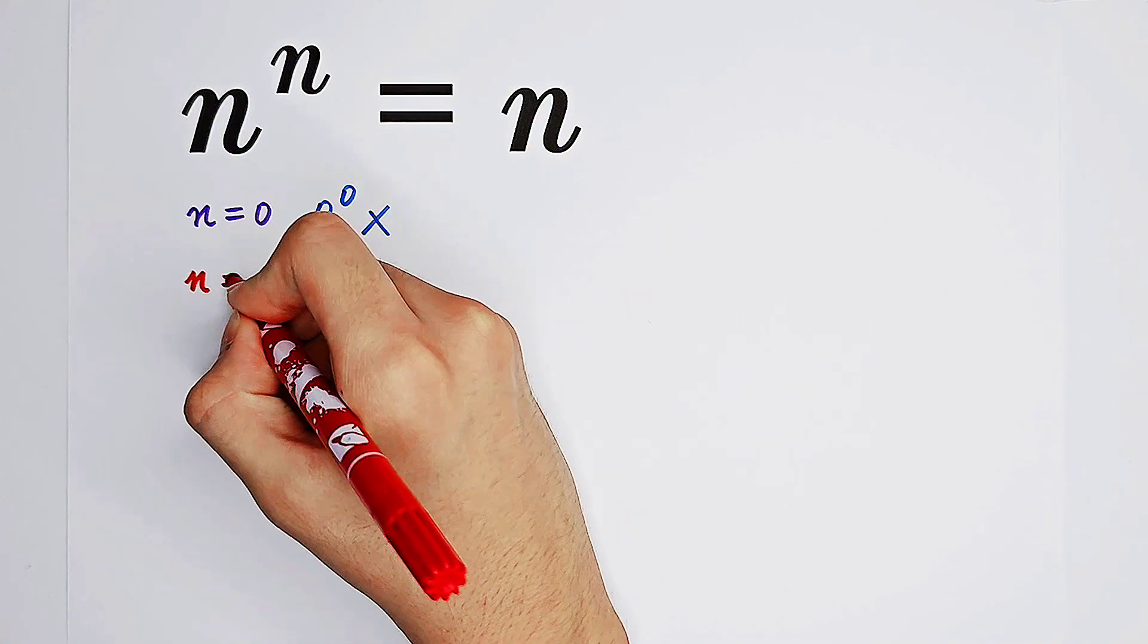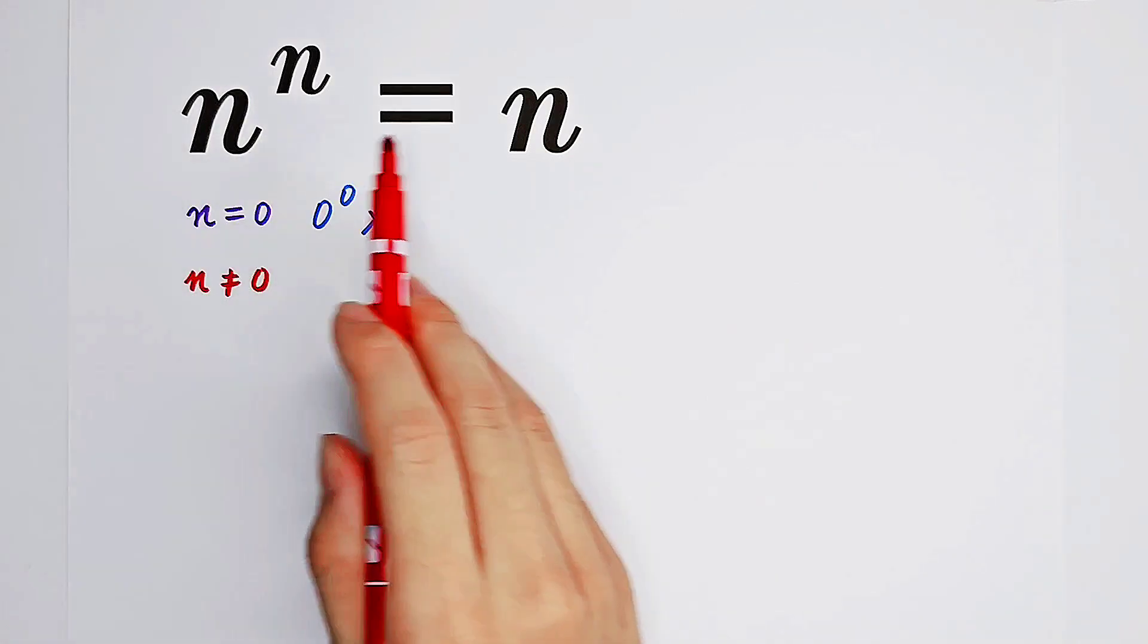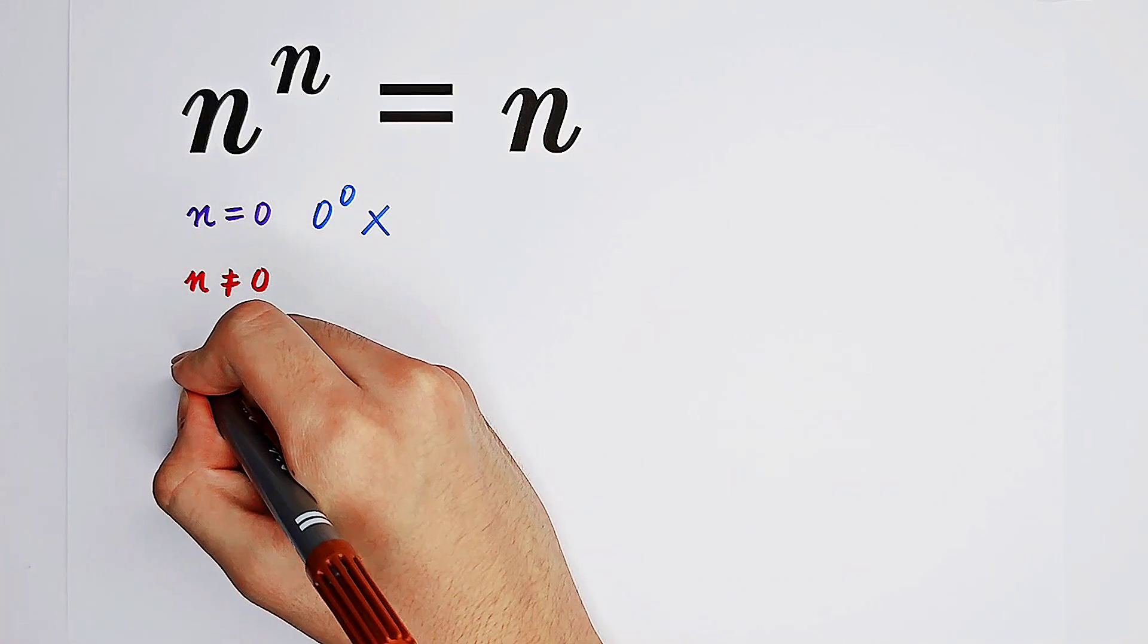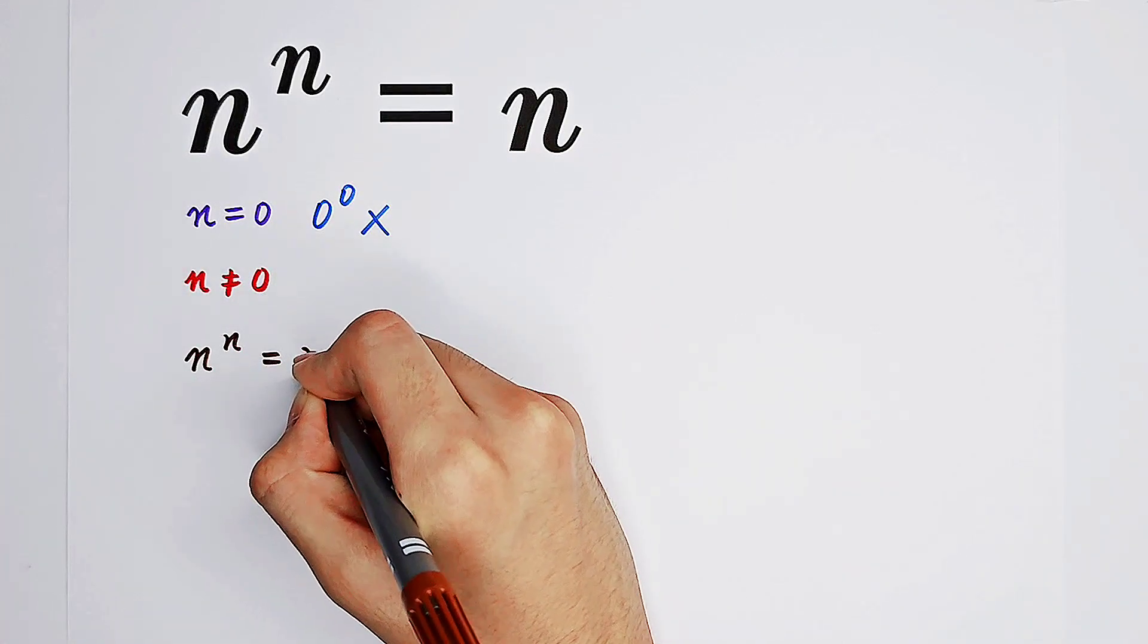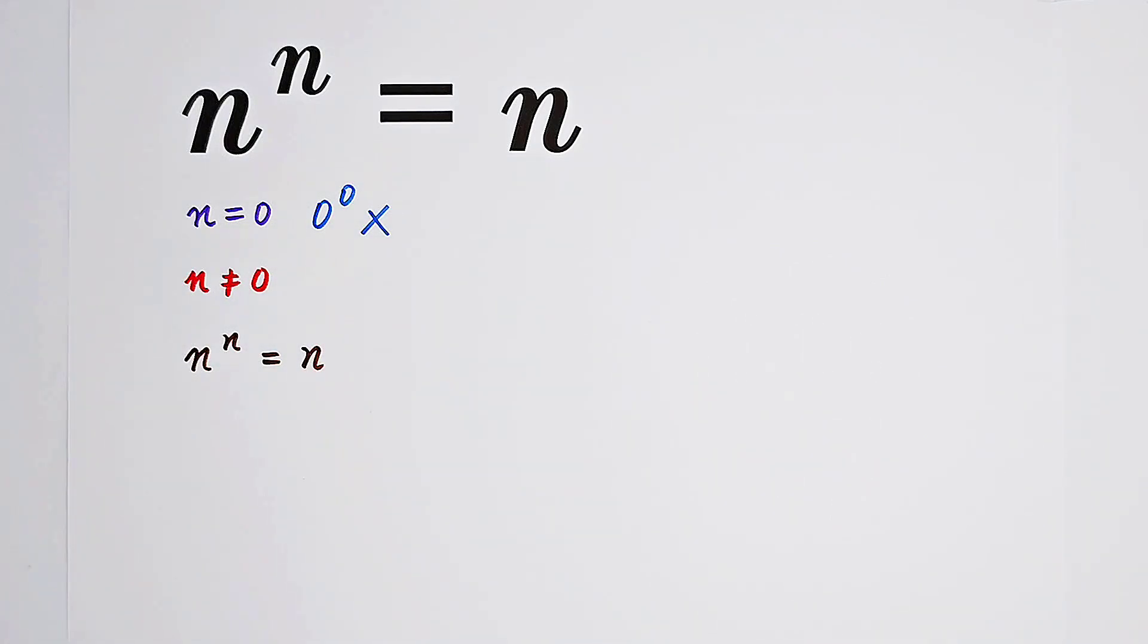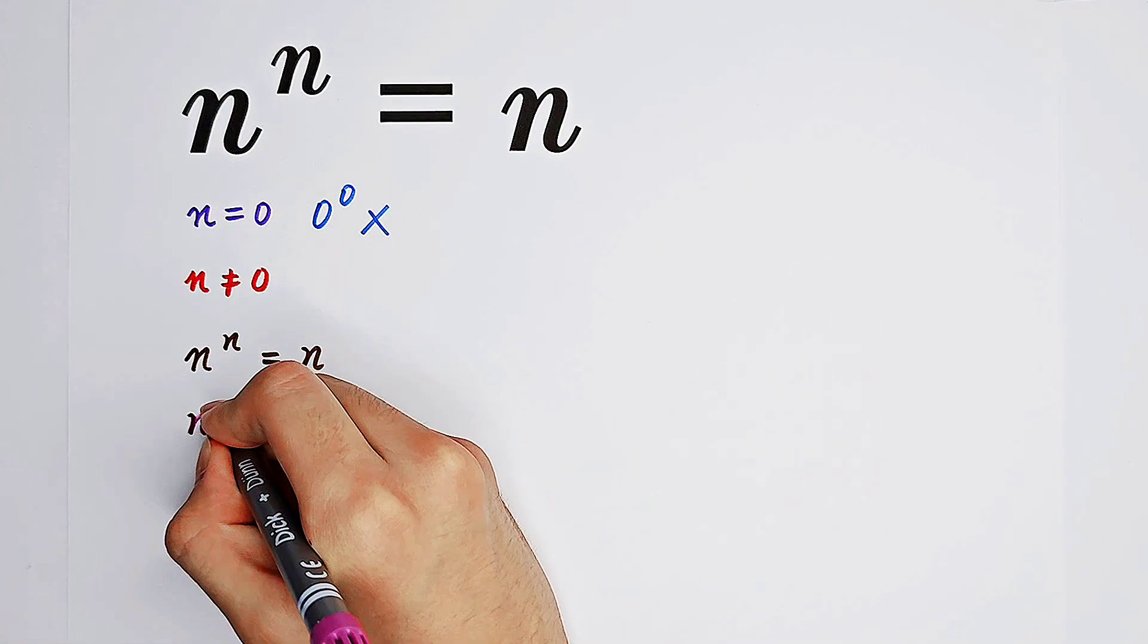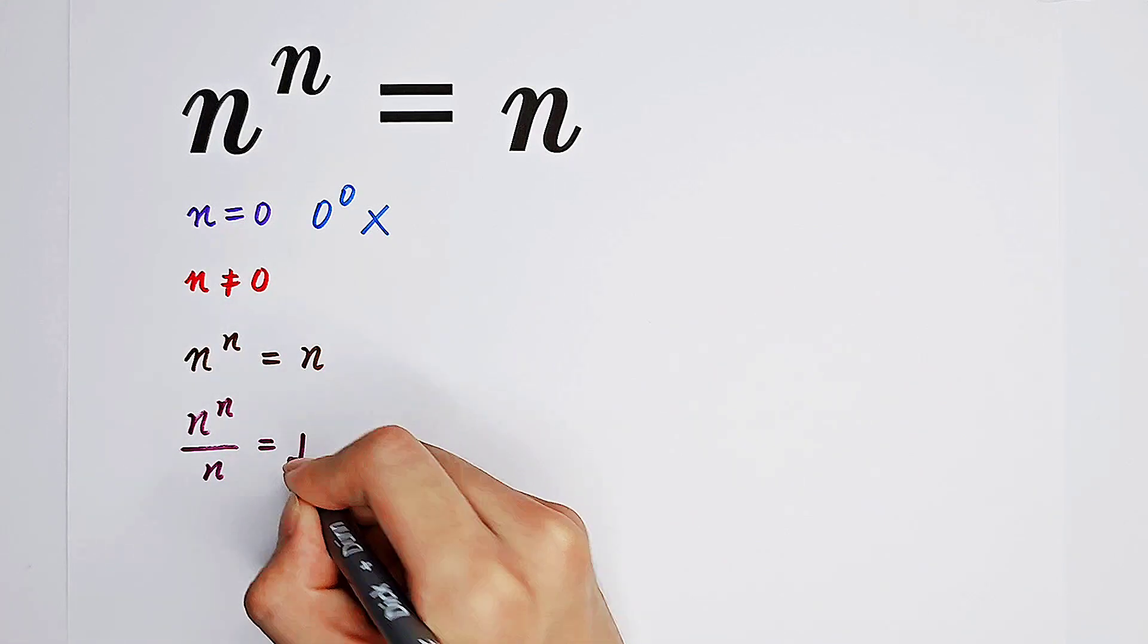So if n cannot be zero, we're very happy that what we can do is divide both sides by n. So now we have n to the power of n equals n. And after dividing both sides by n, n to the power of n over n equals n over n, which is just one.